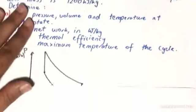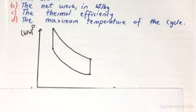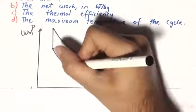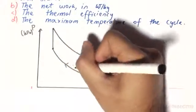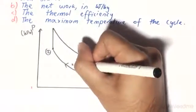So if you have a PV diagram, it will look something like this. We have the initial isentropic compression from process 1 to 2, where the S is going to be constant.